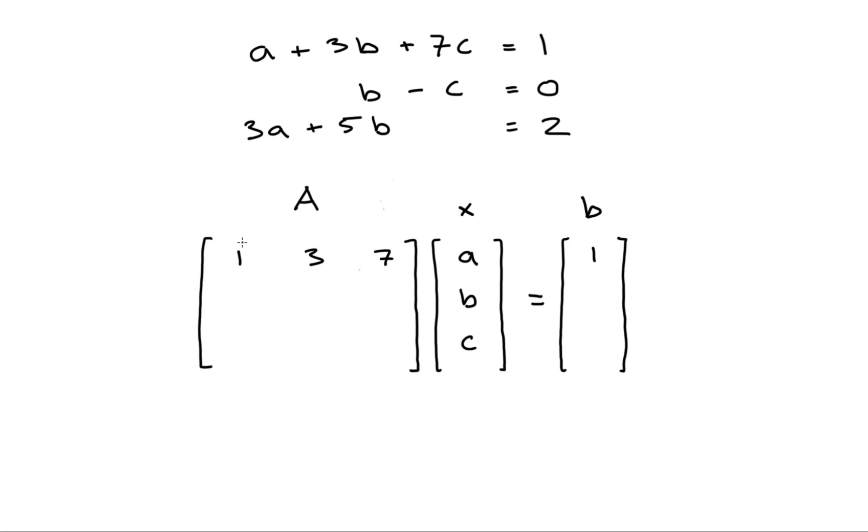Multiplying the matrix A by the vector x requires us to use the dot product such that each row of A will be dotted with the column vector x, and that product should be equal to the corresponding row in the column vector B. In this case, 1 times A plus 3 times B plus 7 times C is the dot product, and all that should equal 1, which agrees with the first equation.